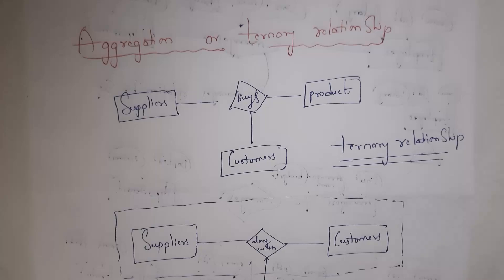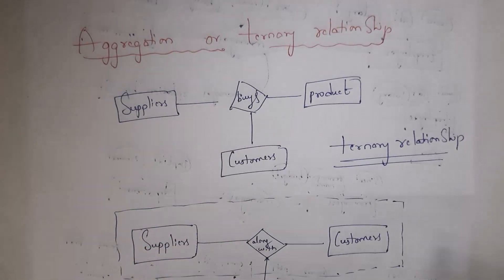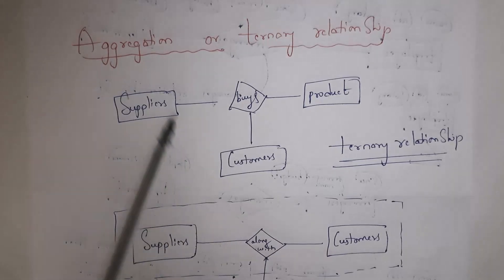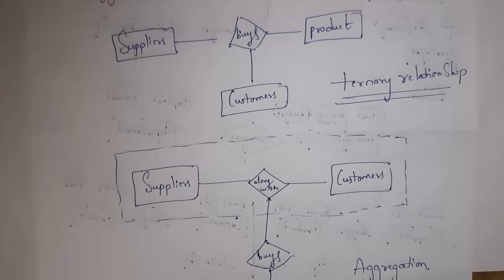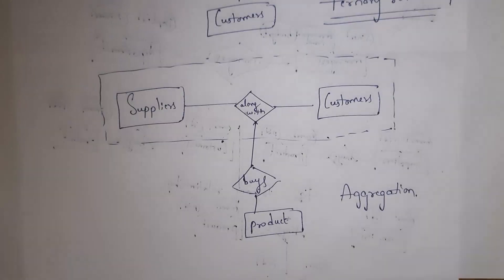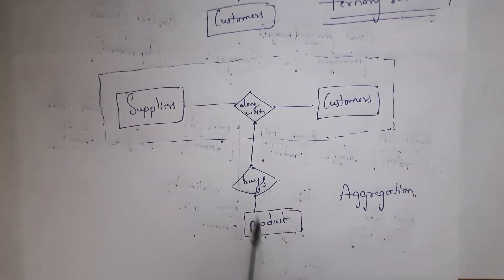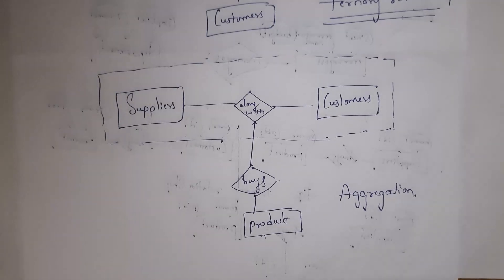Next is aggregation versus ternary relationship. In a ternary relationship, both suppliers and customers buy product. What I will do is convert these two entities into a single entity by establishing an 'along with' relationship. So, suppliers along with customers is considered a single entity. I am establishing a buys relationship — suppliers along with customers buys product. This is all about conceptual design.